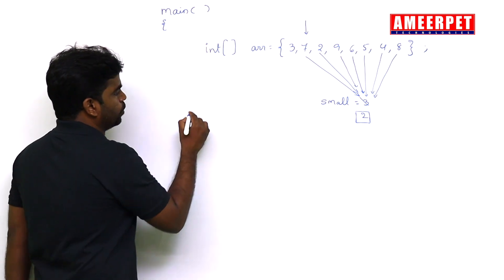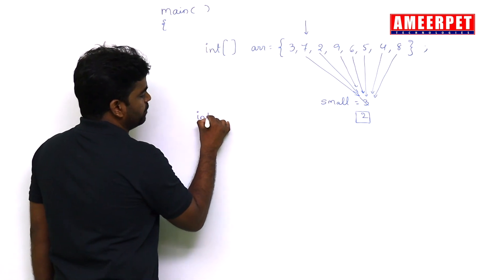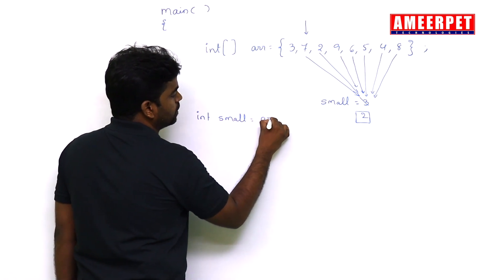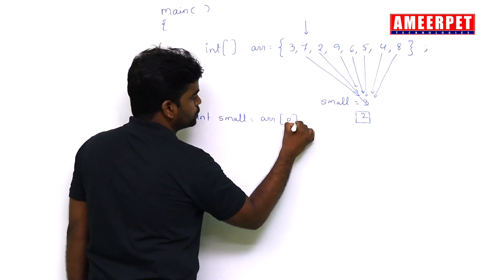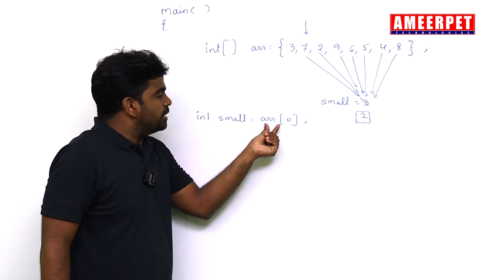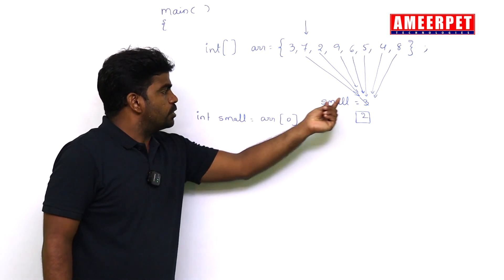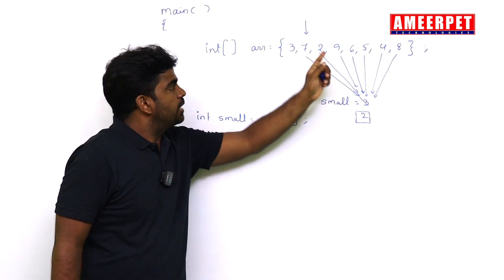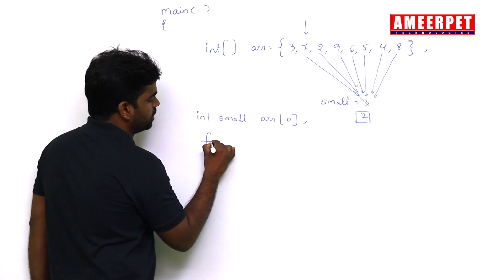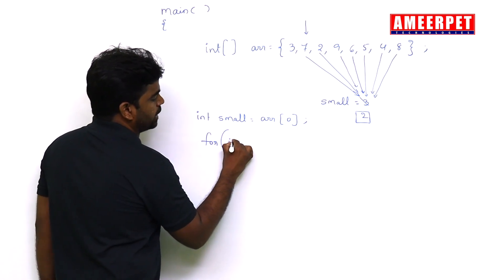The simple way of writing the code is taking one variable small, and we need to store the first element from the array. arr[0] value will be stored into small. So now small is 3. Now compare with other elements. Repeat the loop - zeroth location is not required.